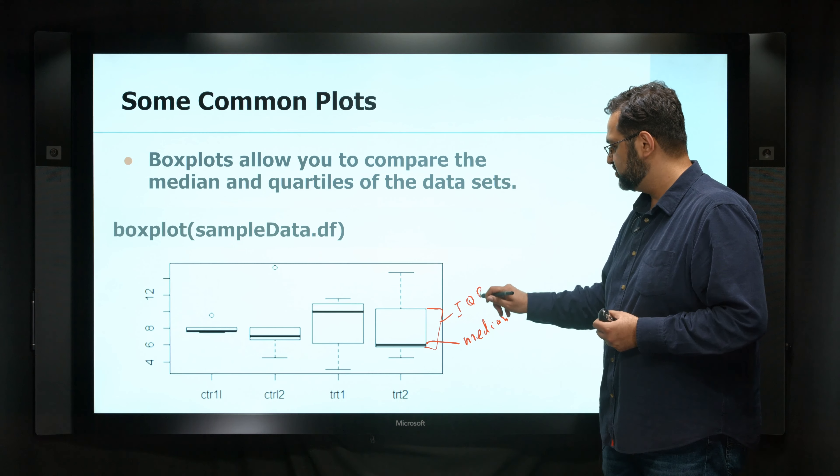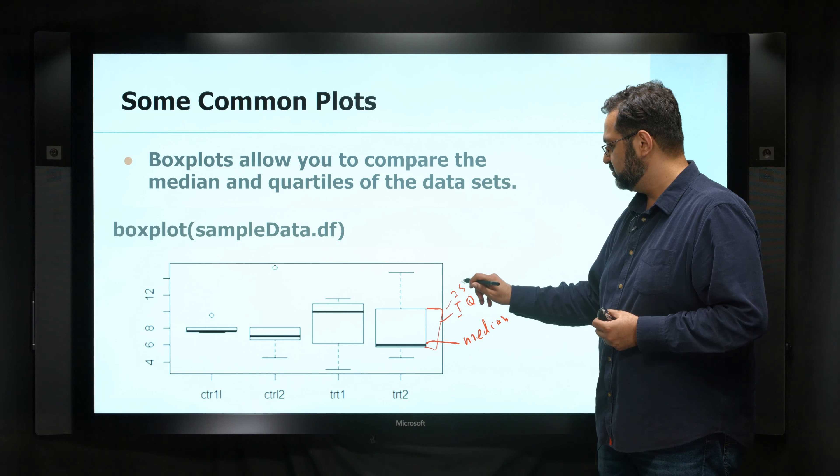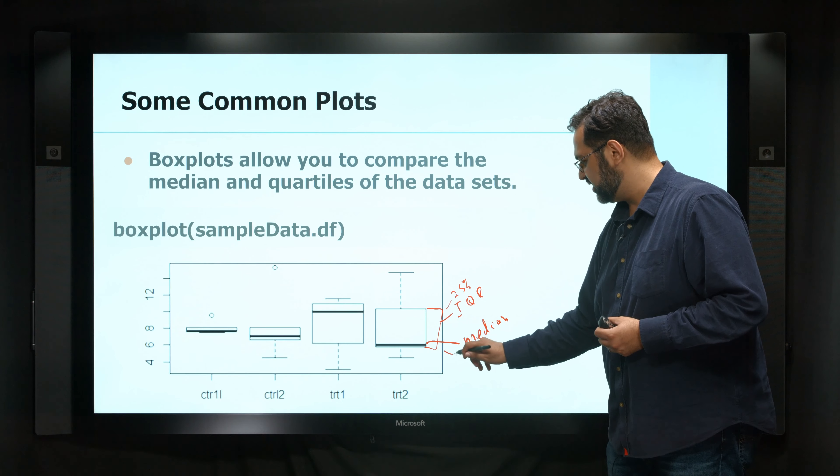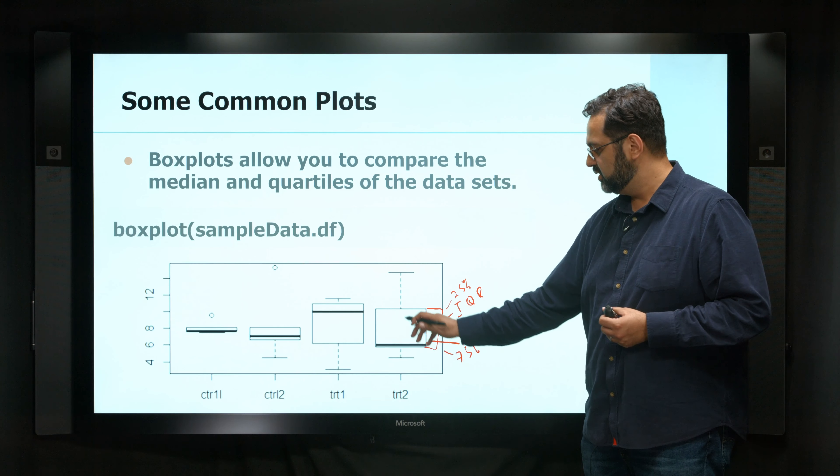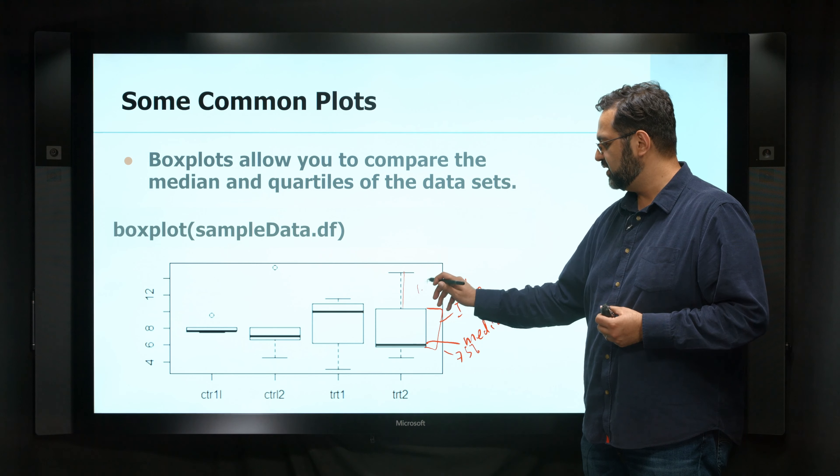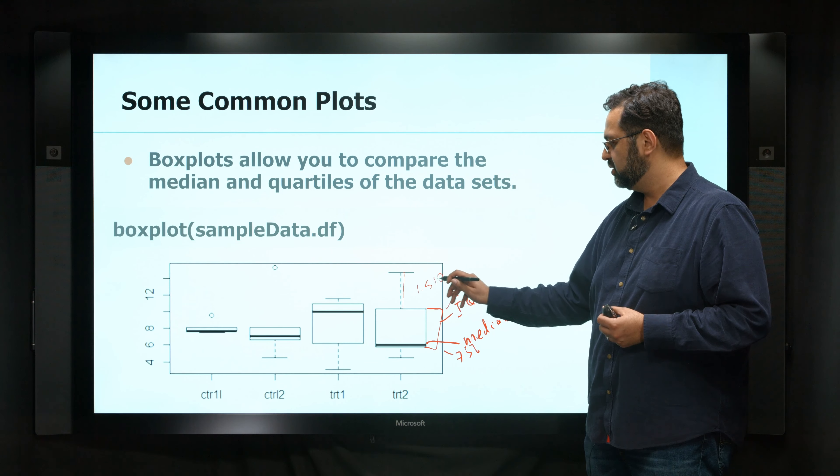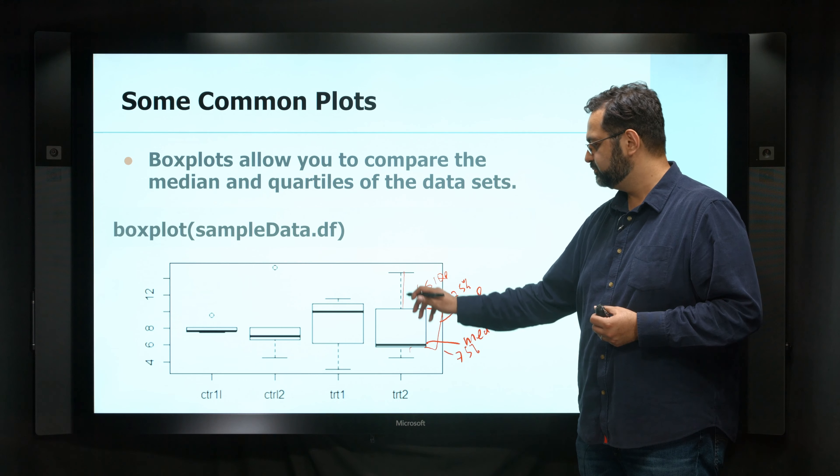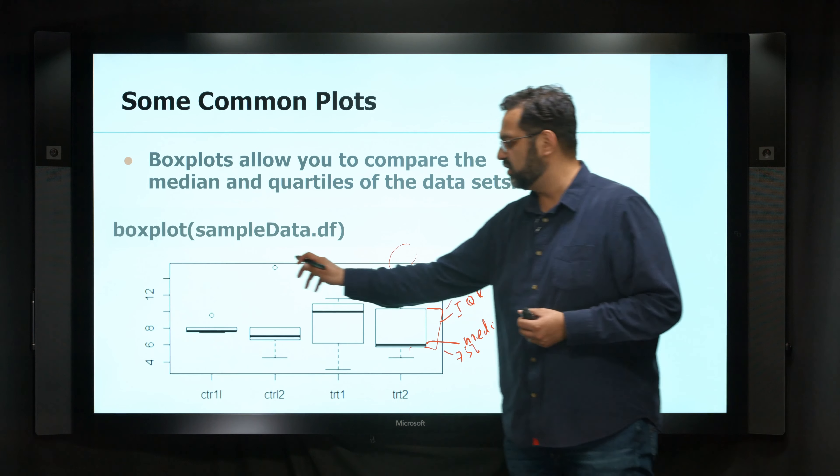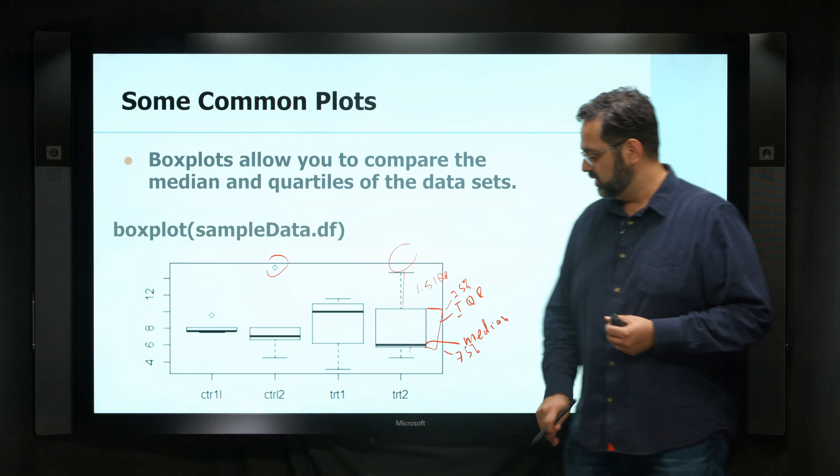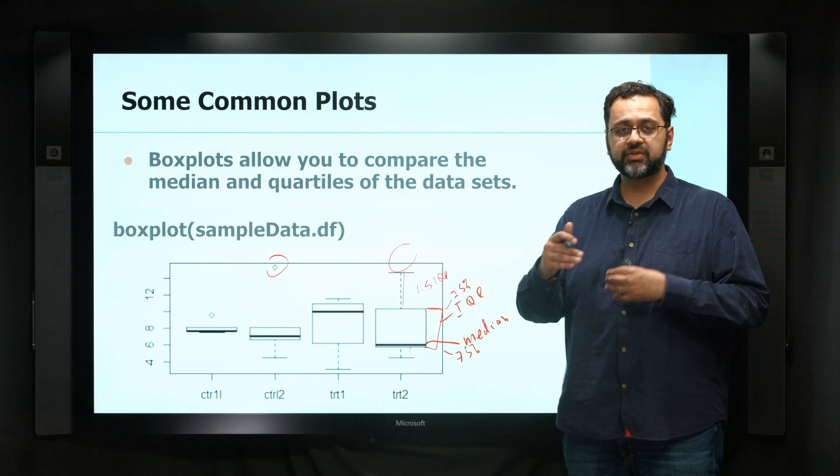which is the 25th to 75th percentile. So the majority of your data is in here. This is 1.5 times your IQR above and below. And then anything outside of these are usually thought of as outliers.